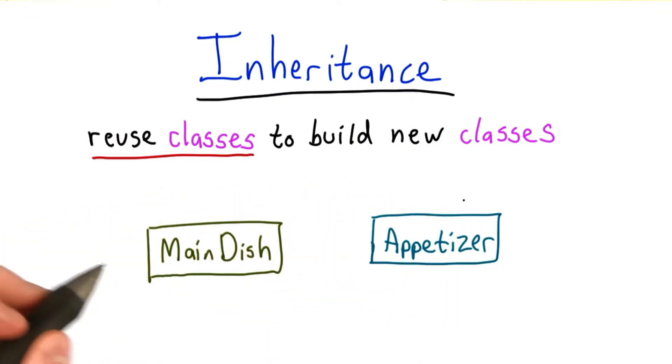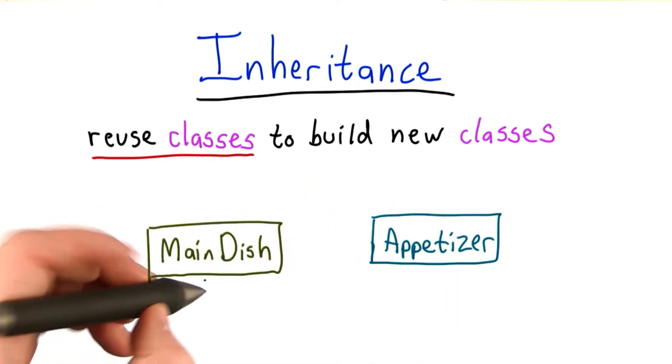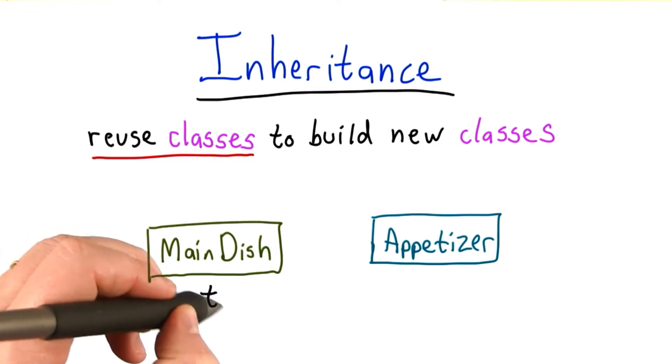So what we wanted to do was to define these two new types, main dish and appetizer, and both of these are types of dishes.